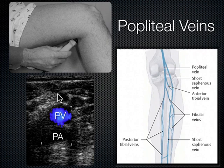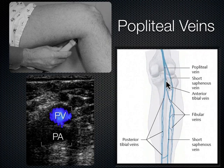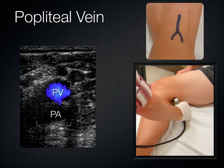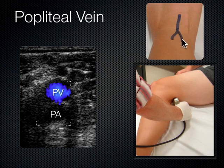The first anechoic structure we see in a transverse plane is going to be our popliteal vein. The deeper structure — closer to the bone — will be the popliteal artery. Eventually that popliteal vein will bifurcate and trifurcate. You're looking from the superior aspect of the popliteal fossa down until you see it bifurcate right at the top of the calf, in that roughly five-centimeter area you're trying to compress.